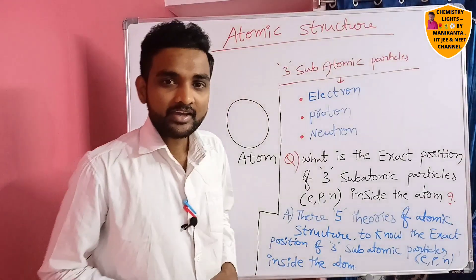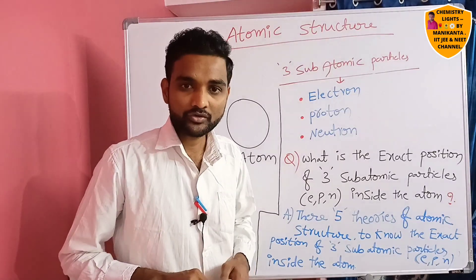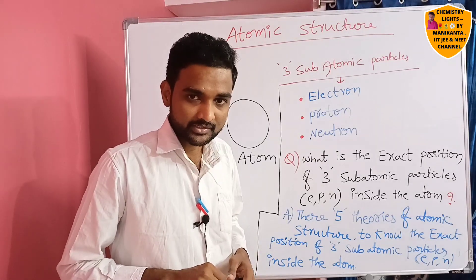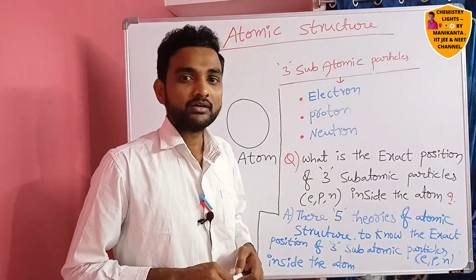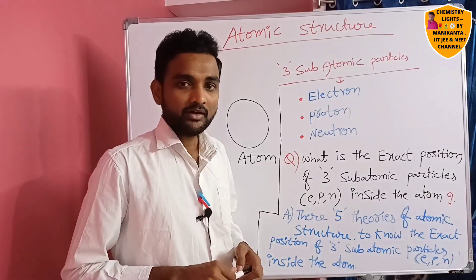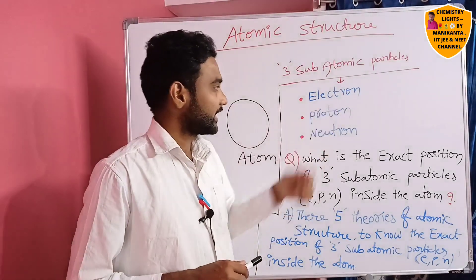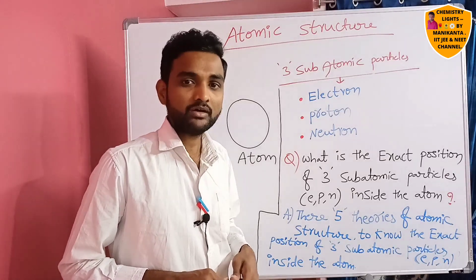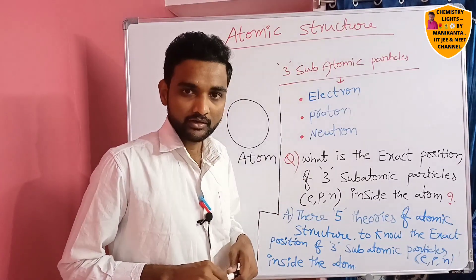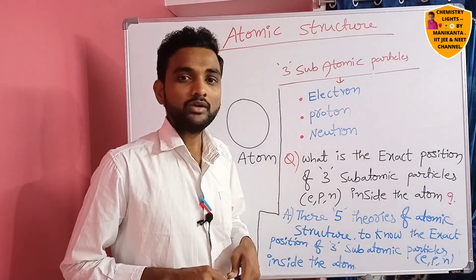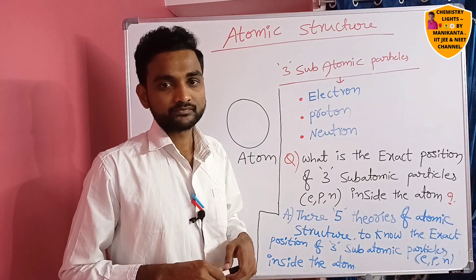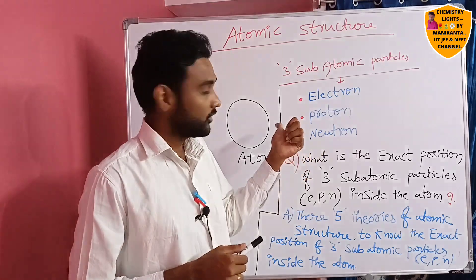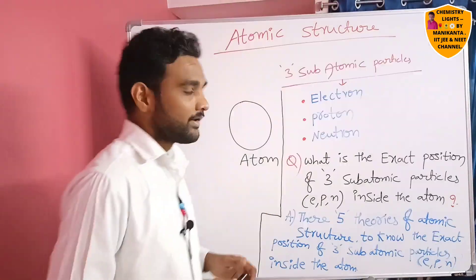In yesterday's class we read about the cathode ray tube experiment, the Millikan oil drop experiment, and the anode tube experiment, and the comparison between three subatomic particles: electron, proton, and neutron. If you didn't see that video, I'll keep a card and give a link in the description — you need to see it first to understand this video.